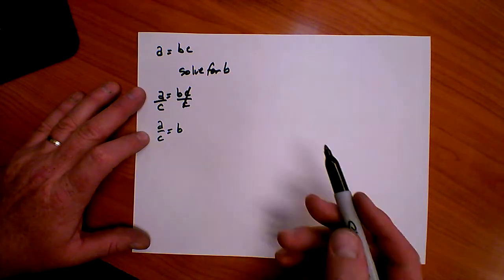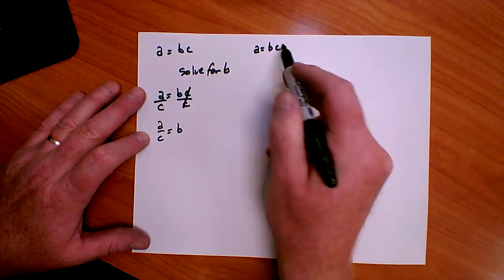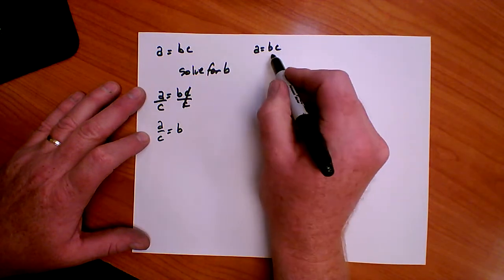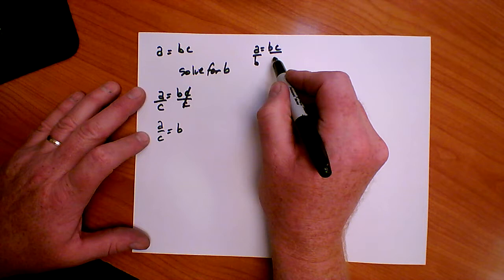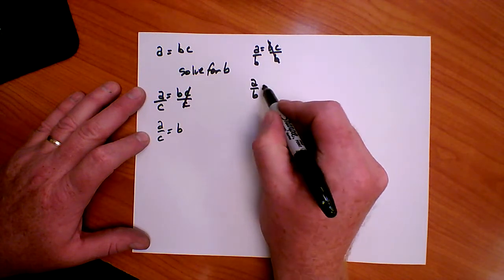If I want to solve for C, I can have A equals BC. To solve for C, I need to get rid of this multiplied by B. So I'm going to divide both sides by B. The B's will cancel. A over B equals C.